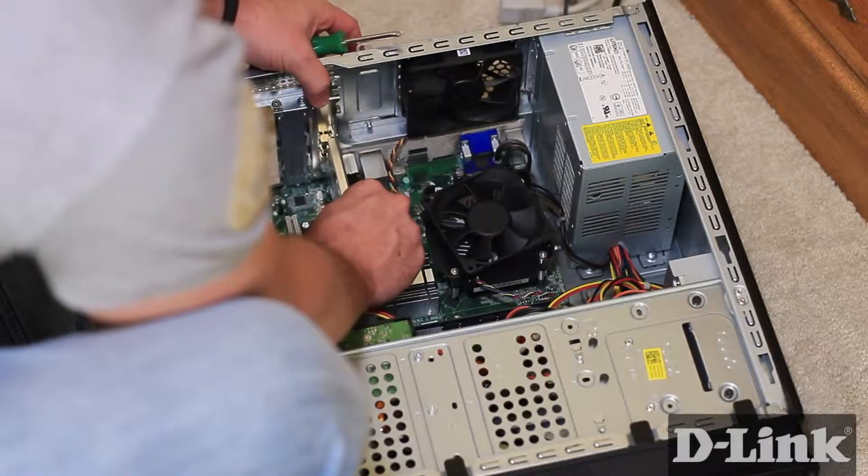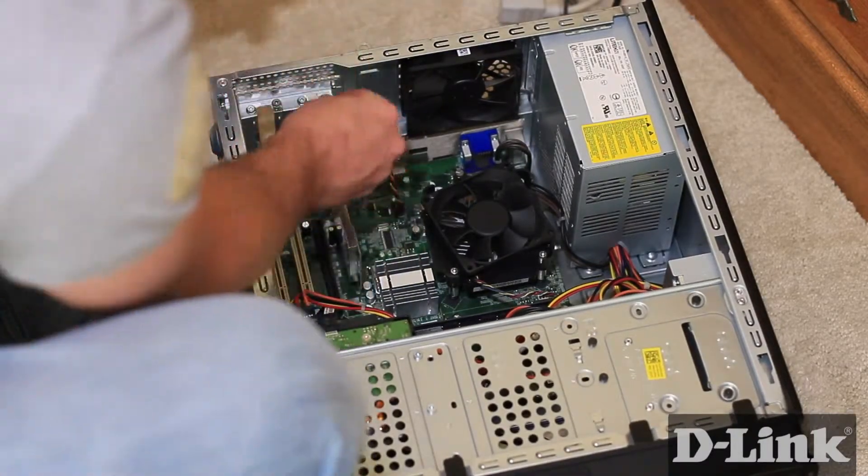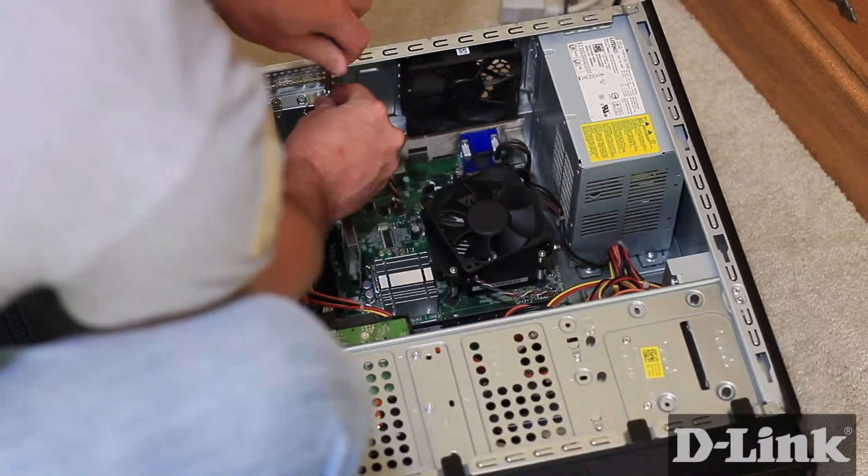Line up and slide the notched side of the DWA-556 into the PCI Express slot that we identified earlier. The connection should feel snug, but you shouldn't have to force it.